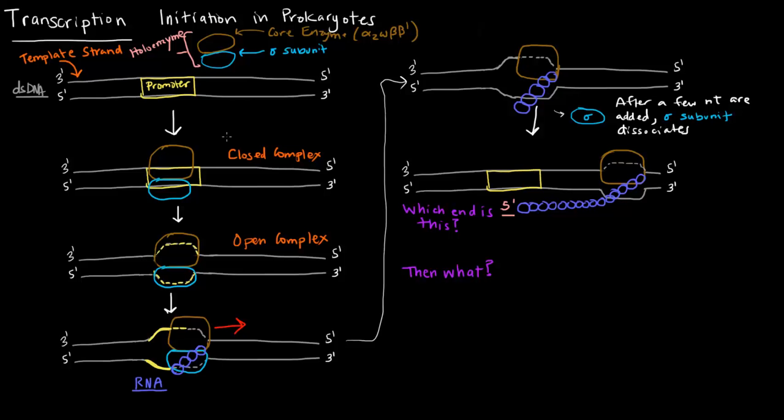So then what happens? Well then it's elongation. Elongation is just the idea that this RNA polymerase is going to continue adding nucleotides. It's going to keep adding them, and when I say it keeps going, I'm talking about the core enzyme. It keeps going until a termination site is reached.